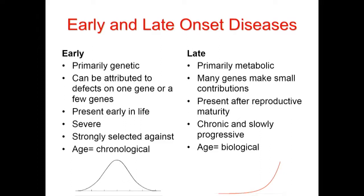For late-onset chronic diseases, we're talking more about processes like entropy, random mutation, and metabolic dysregulation — so many genes make only small contributions. These diseases present after reproductive maturity, are chronic and slowly progressive. And age here we have to think of in terms of biological time, not just chronological time.